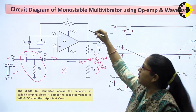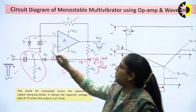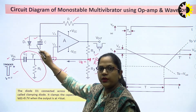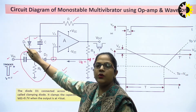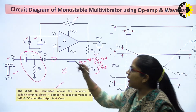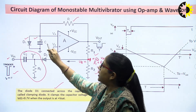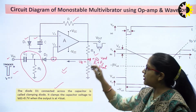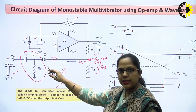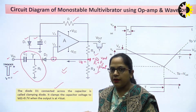In the negative feedback path, a feedback resistor is connected. At the inverting terminal, a combination of diode D1 and capacitor in parallel is connected. Diode D1 is called the clamping diode — when forward biased, it clamps the capacitor voltage equal to its diode voltage Vd1. The capacitor charges or discharges through resistor R. This completes the monostable multivibrator circuit using the op-amp.